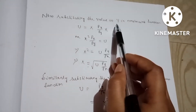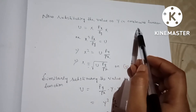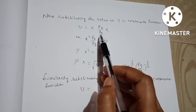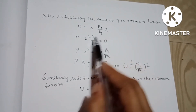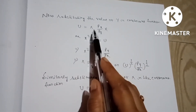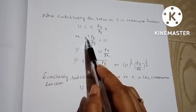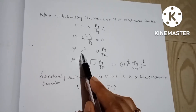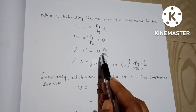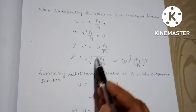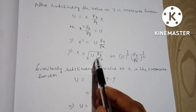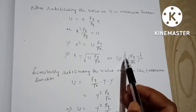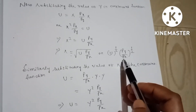Substituting the value of Y into the utility function U equal to X·Y, we get U equal to X times (PX/PY)·X, which gives X² times (PX/PY) equal to U. Therefore X² equal to U·(PY/PX), and X equal to U^(1/2) times (PY/PX)^(1/2).